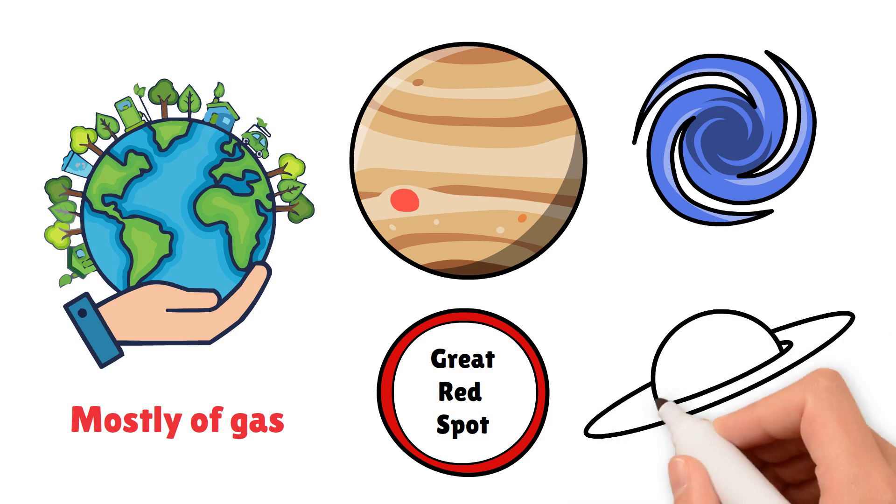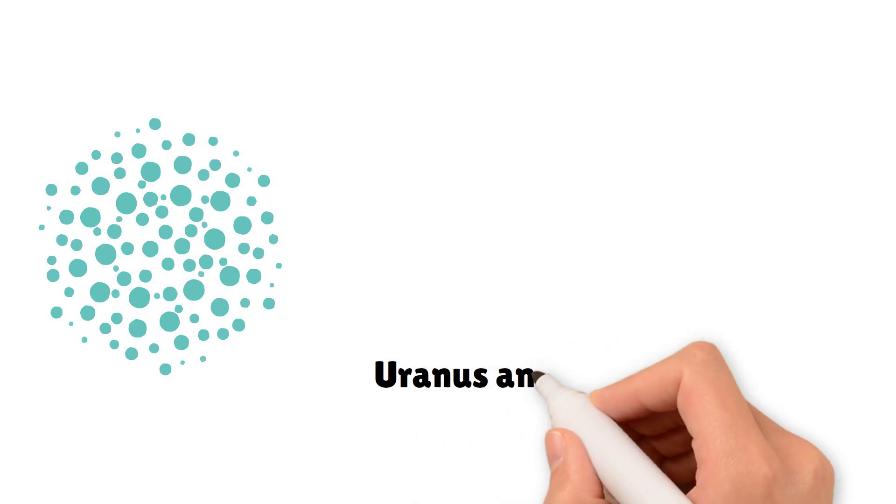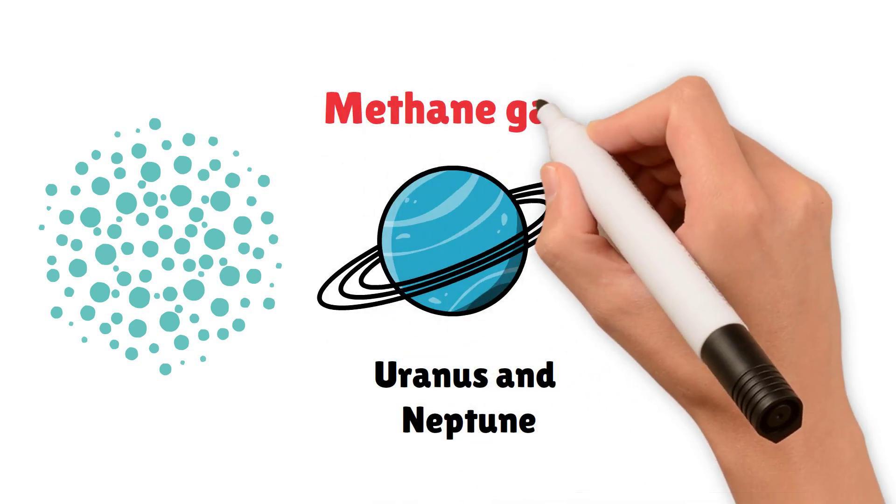Saturn is famous for its beautiful rings, which are made of ice and rock particles. Uranus and Neptune are both blue planets because of methane gas in their atmospheres.